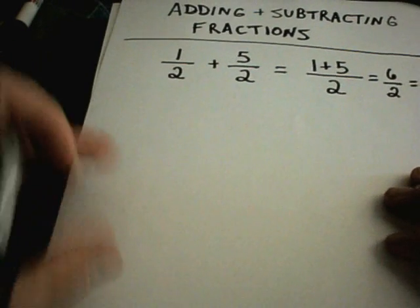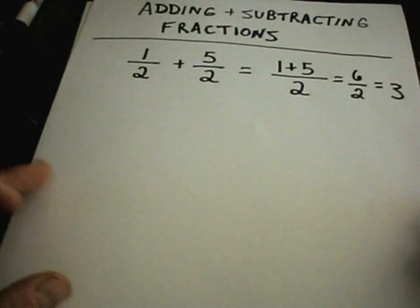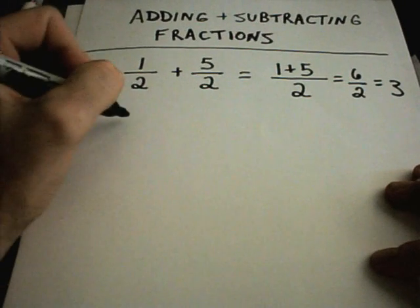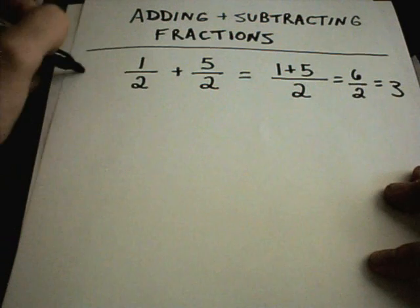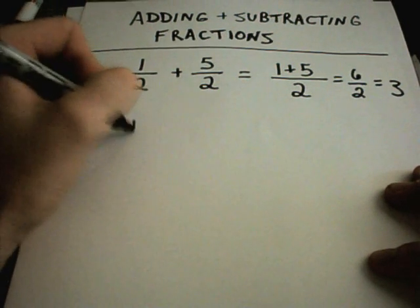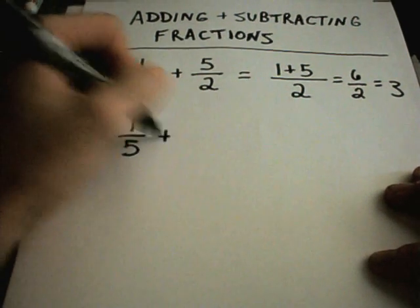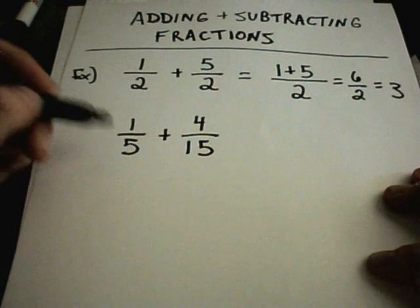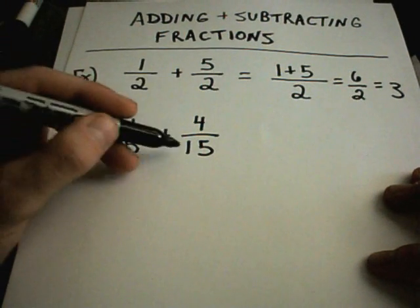If you don't have common denominators when you have just plain old numbers, you're going to have to get common denominators. Sometimes you'll only have to manipulate one of the fractions. Suppose I have 1 fifth plus 4 over 15. Well, certainly the numbers on the bottom are not the same.